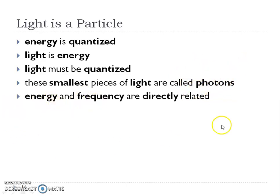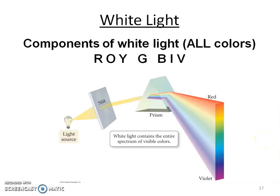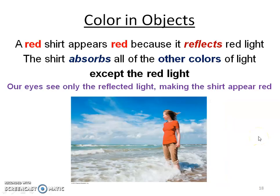Energy and frequency are directly related to each other — they do the same thing. When we take white light, pass it through a slit and a prism, we get Roy G. Biv — we get the full rainbow. When we're dealing with objects that have color, like a red shirt, we see red because that's the color being reflected. The shirt is actually absorbing all the other colors and all we see is the red.